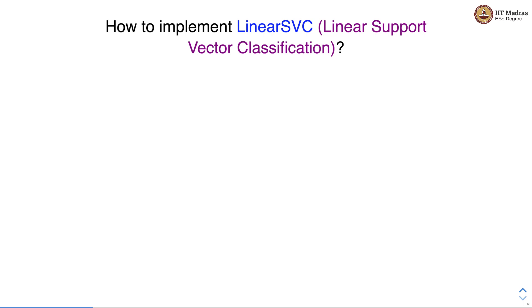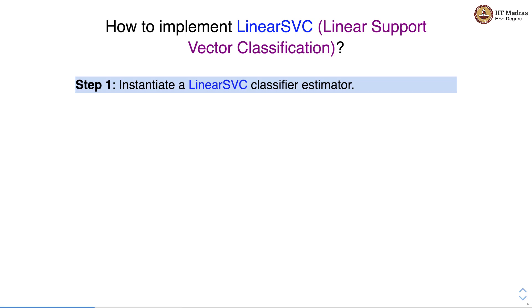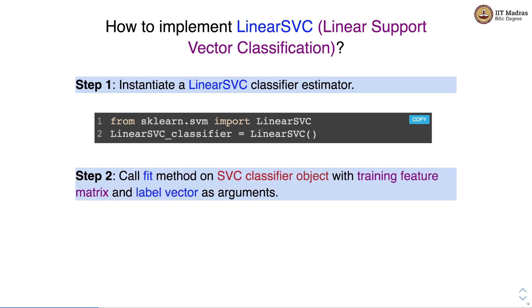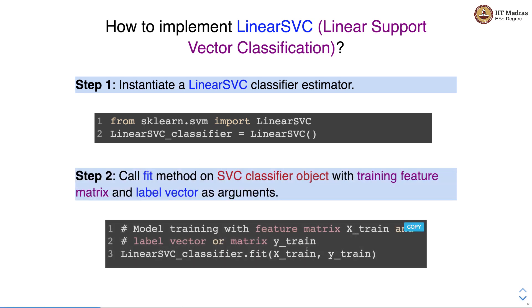Let's see how to implement LinearSVC, which is Linear Support Vector Classification. We import LinearSVC from sklearn.svm, instantiate the LinearSVC object, and call the fit method with training feature vectors and label vector as arguments, just like the other SVM classifiers.